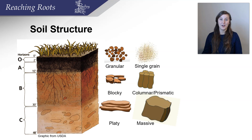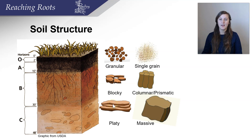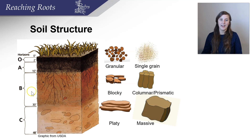Soil structure is also very important. Sometimes soil can be in huge massive blobs, making it hard for roots to penetrate and grow down to get more water and nutrients. Different plants are more tolerant of growing in different soil structures. This is a soil profile — if you dig deep into the soil, you can see different layers: the top O layer or organic layer, and then zones A, B, and C.